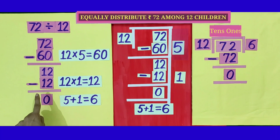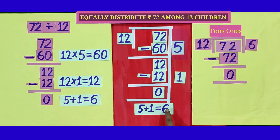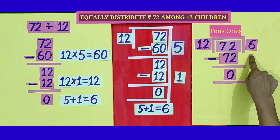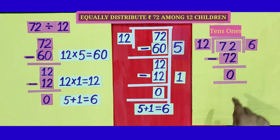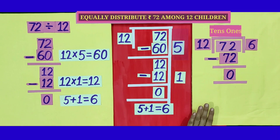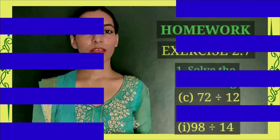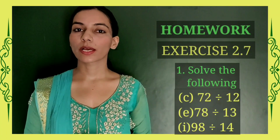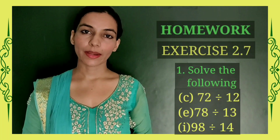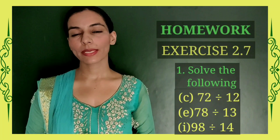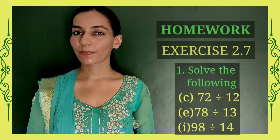Dear students, when we equally distribute the currency notes, each member gets 6 rupees. Through the non-standard method of division, each one gets 6 rupees. And through the standard method of division, each one gets 6 rupees. So we have learnt the non-standard method and the standard method of division, and either way we are getting the same answer. Your homework is that you will attempt part C, part E, and part I of question 1 from exercise 2.7. Thank you so much.